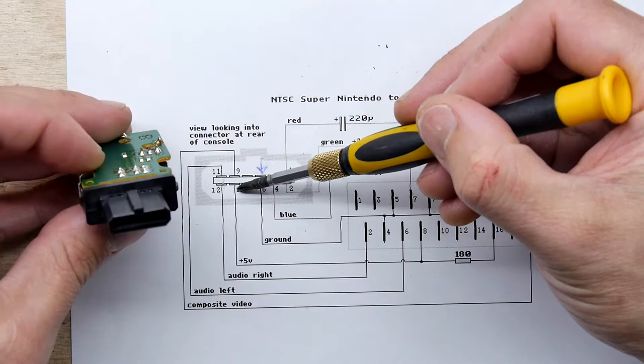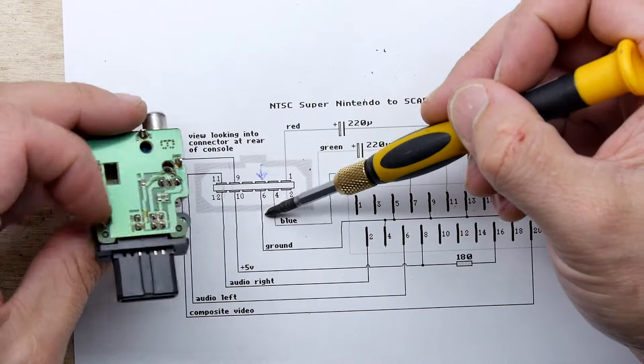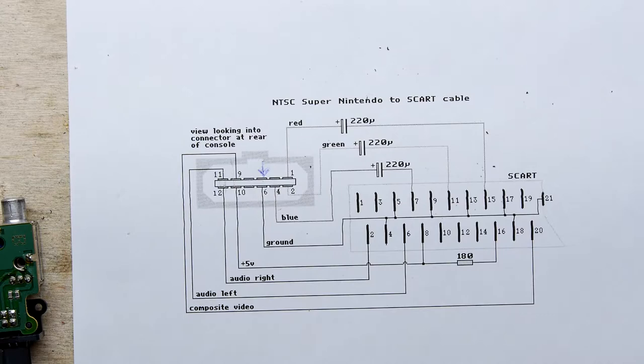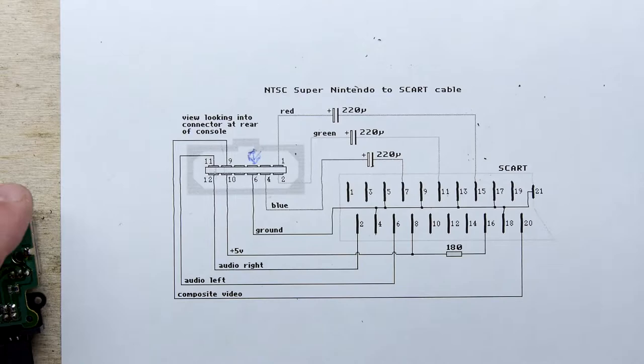Five volts and composite video are separate, then there's a gap which is here, and then there's ground. Pin five and six are ground, so it's very similar, pretty much the same. The audios are just joined together.